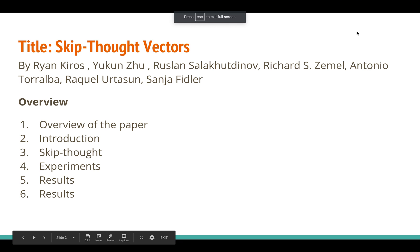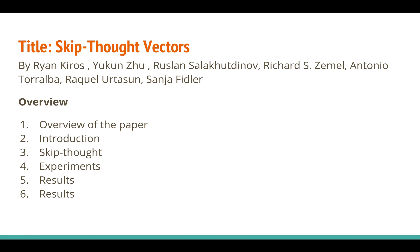Hello everyone, welcome back to my channel 'Deep Understanding of Research Papers.' Today I will cover the paper 'Skip-Thought Vectors,' authored by well-known people in the deep learning community: Jamie Ryan Kiros from University of Toronto (now at Google Brain), Yukon Zhu, Ruslan Salakutdinov (now at CMU and director of AI at Apple), Richard Zemel (professor at University of Toronto), Antonio Torralba (well-known in computer vision), Raquel Urtasun (leading Uber's ATG, working at Vector Institute), and Sanja Fidler (director of NVIDIA AI).